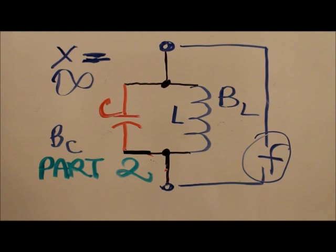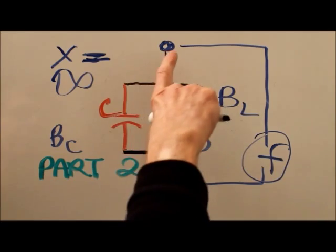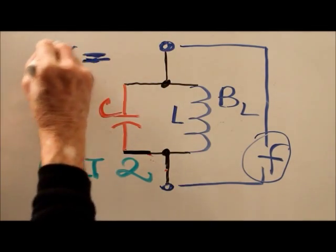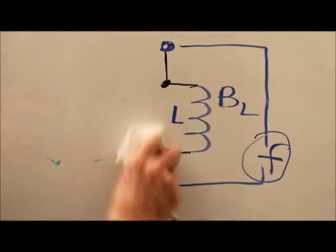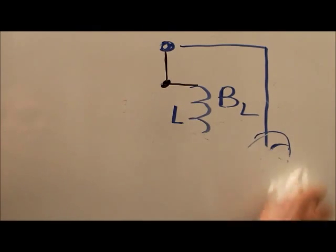Stan Jibalisco back again with part two of our tank circuit tutorial. In part one, I talked about how the susceptances cancel out at a particular frequency f when you connect a coil and a capacitor in parallel, thereby getting what in effect amounts to an infinite opposition to alternating current between the two terminals at the extremes of the circuit.